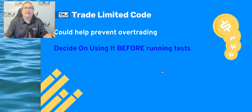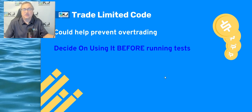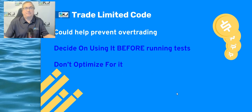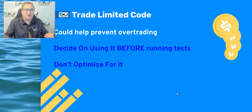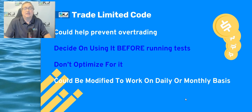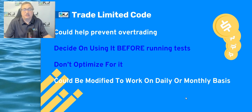The key is: don't use this code after you look at the results and then decide to add it in. Do it before running your test, because otherwise you're optimizing for it — you run it with and without, pick the better result, and that's just optimization, which is dangerous. You could also modify this to work on a daily or monthly basis if you'd rather limit trades per day or per month.